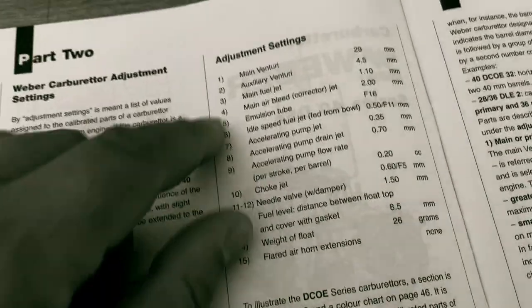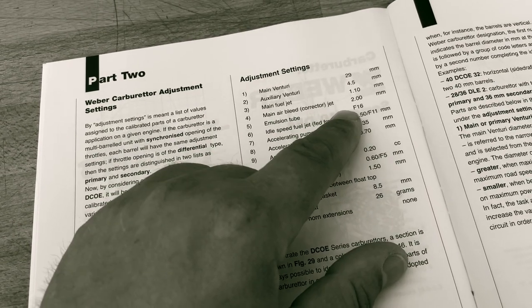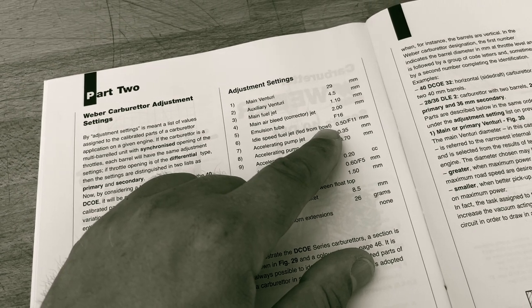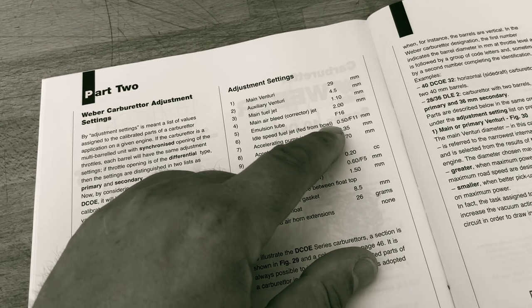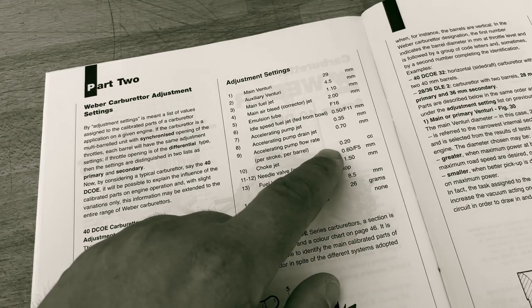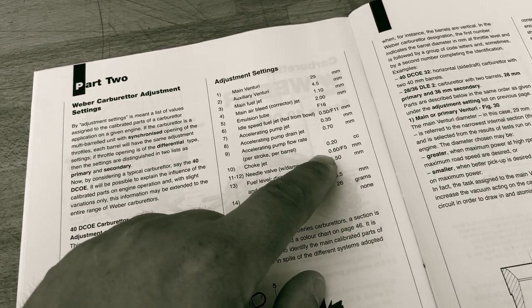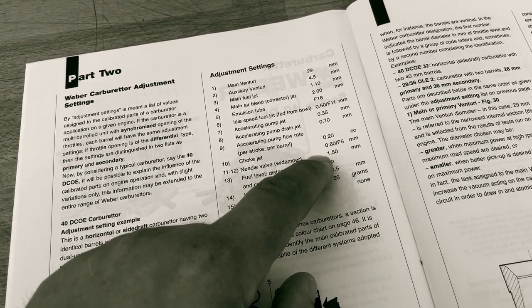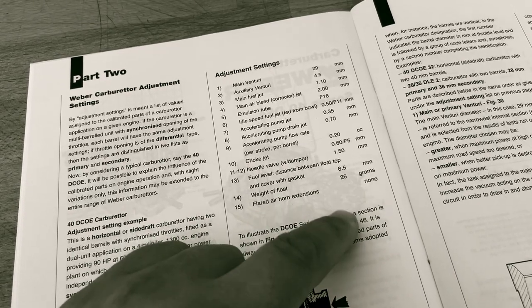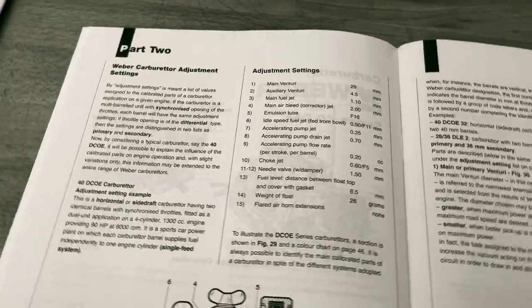They have a setup example here: 29mm main venturi, 4.5mm auxiliary main jets, 1.1 correction air jets, 2.0 F-16 tube, F-50 and 50 F-11 idle jet, acceleration 35, 70 for the flow back, then a 20.20cc stroke for the pump, and choke - I don't use a choke. Needle valve would be 1.5, fuel level with a brass float 8.5mm and the weight of the float 26 grams. So this is what Weber would actually suggest for a 1300 Giulietta engine. Well, mine is a little different.